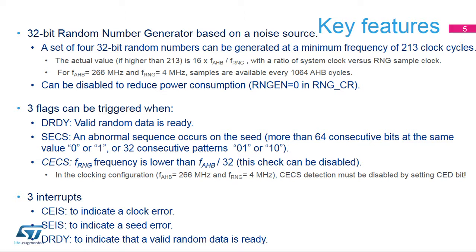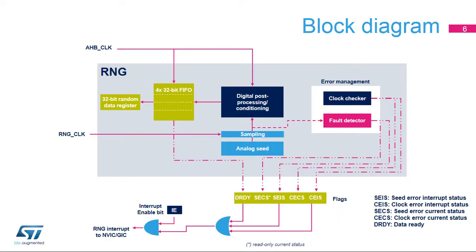An interrupt source can also be enabled to indicate an abnormal seed sequence or frequency error. This simplified block diagram of the RNG shows its basic functional and control modules. The random number generator is based on an analog circuit made of several ring oscillators whose outputs are sampled, then XOR'd, to generate the seeds that feed a digital post-processing block that is able to produce four 32-bit random numbers per round of computation. The sampling of analog seeds is clocked by a dedicated RNG clock signal so that the quality of the random number is independent of the HCLK frequency.